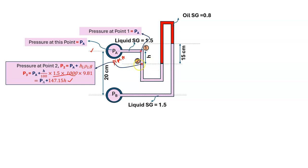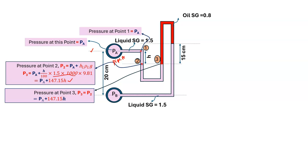Drawing a horizontal line at the two-fluid interface, pressure is the same at the same horizontal level for the same fluid. So whatever pressure exists on one side at that level is the same on the other side. Therefore P3 equals P2, which is PA plus 147.15·H.